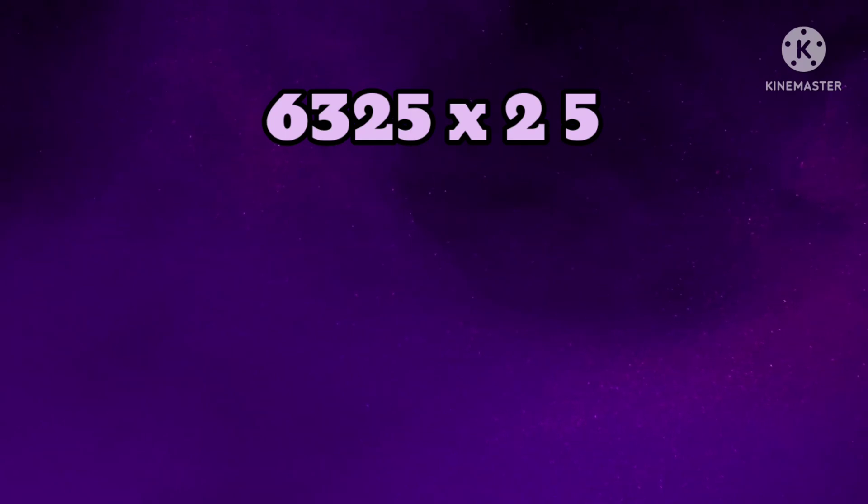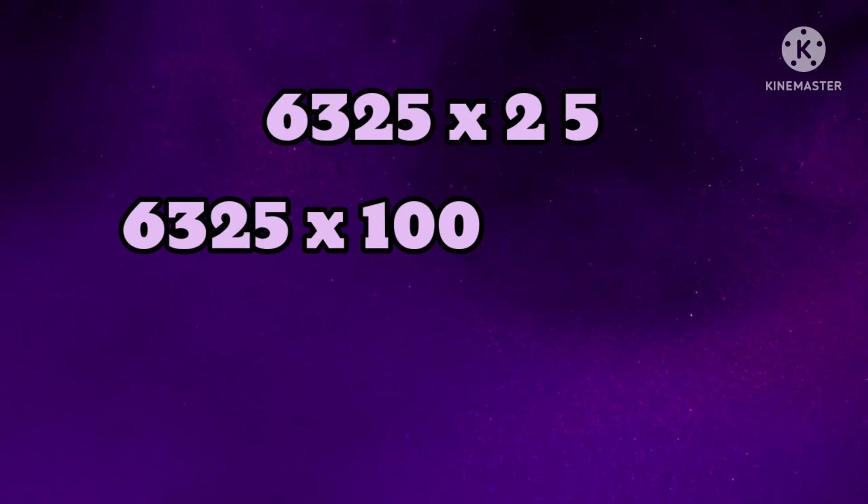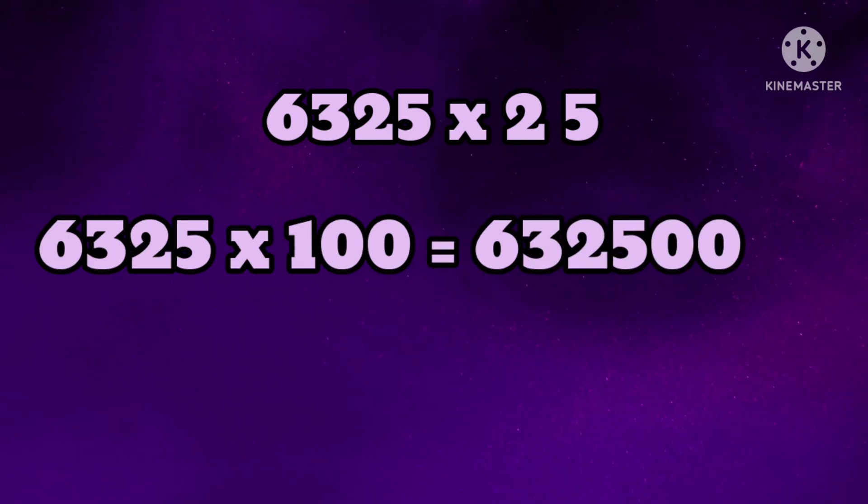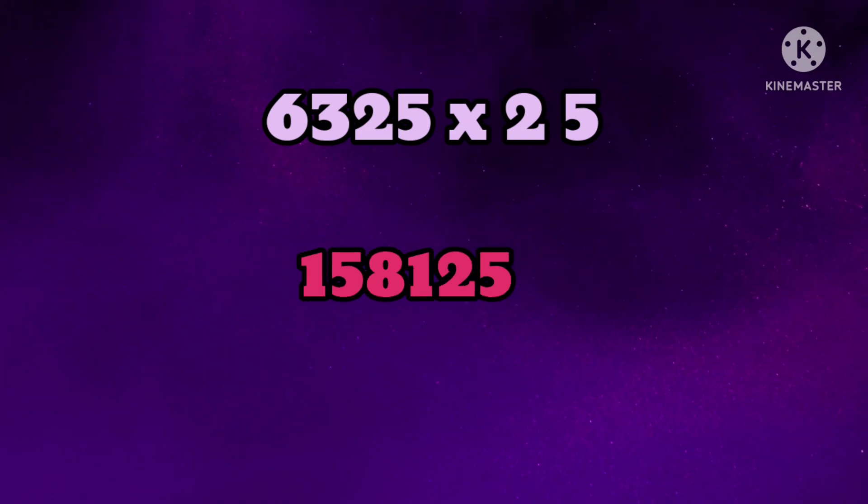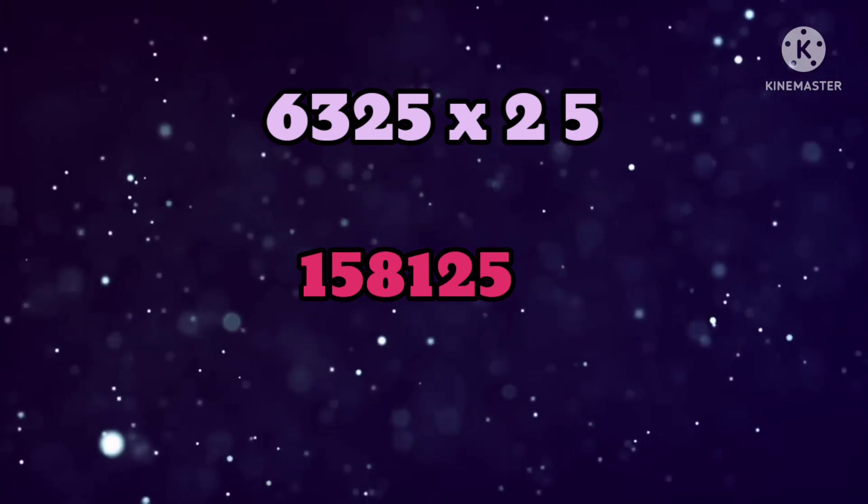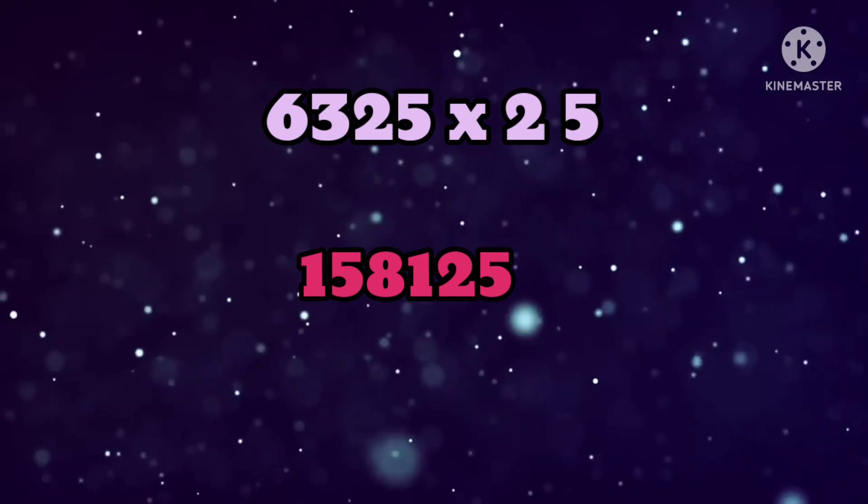One more number for you: 6325 multiplied by 25. First, 6325 multiplied by 100: 632500. Then 632500 divided by 4: 158125. Answer is 158125.